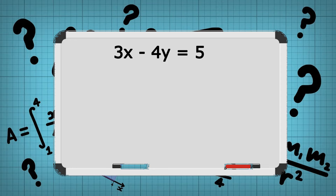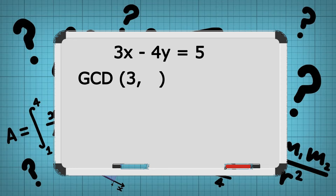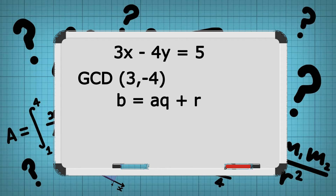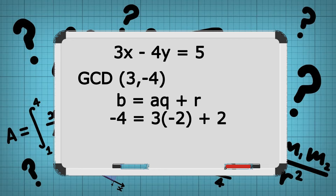In this given linear Diophantine equation, 3x minus 4y equals 5, our A will be 3, which is at the x, and negative 4 is our B, which is at the y. So to get the GCD, we will now be using the Euclidean algorithm in the form B equals AQ plus R. Substituting it, negative 4, which is our B, is equal to 3, which is our A, times negative 2, which is the quotient, plus 2, which is the remainder.